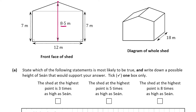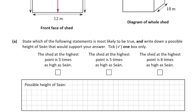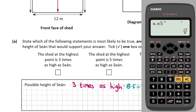We need to work out if 8.5 is three times, five times, or eight times Sean's height. Starting with three times: to find Sean's height we do 8.5 divided by 3, which gives us 17 over 6, or as a decimal 2.83 meters. So Sean's height if the shed were three times as high would be 2.83 meters.